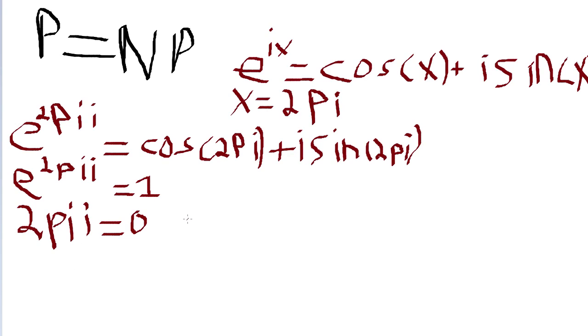Now let's just continue this equation, so 2 pi i squared is equal to 0. I squared is equal to negative 1, so then negative 2 pi is equal to 0.